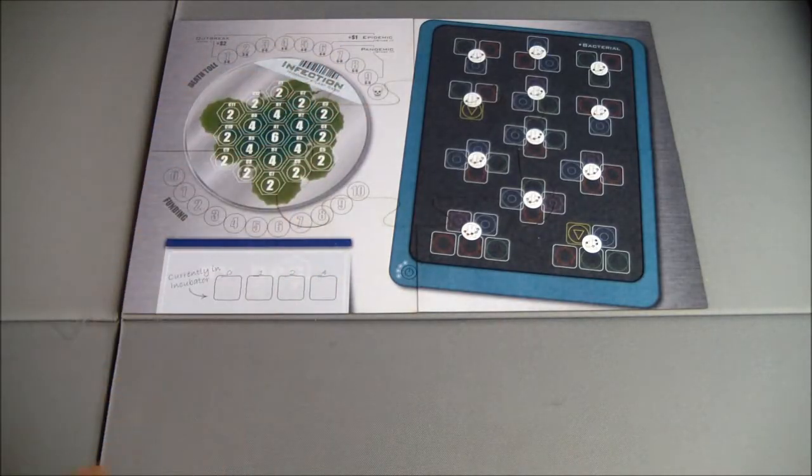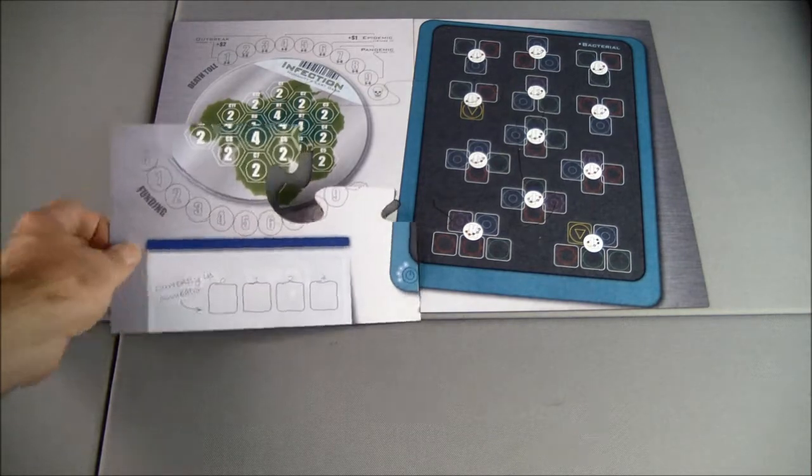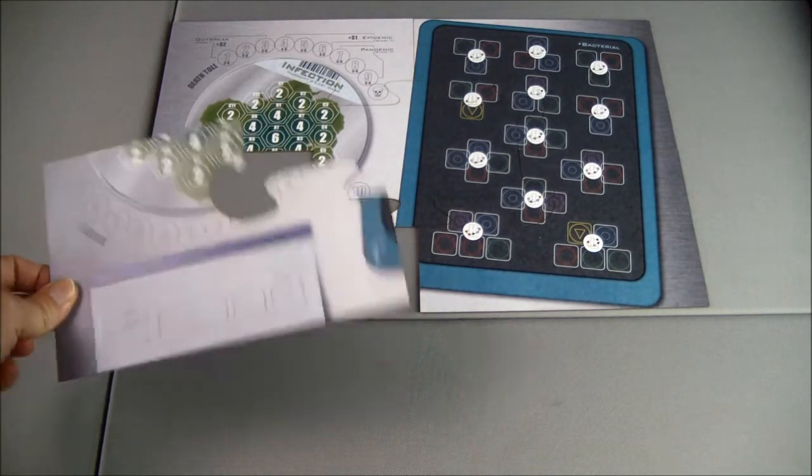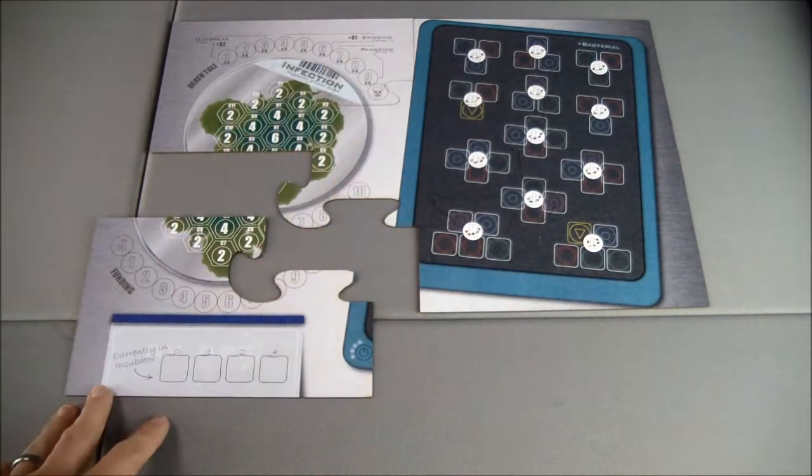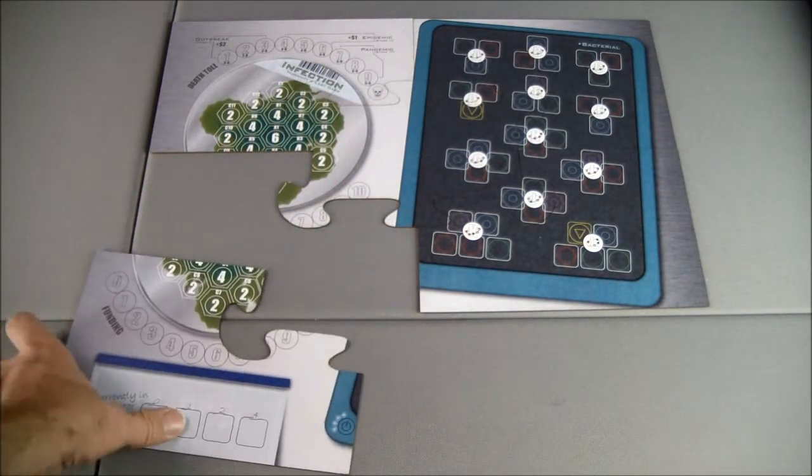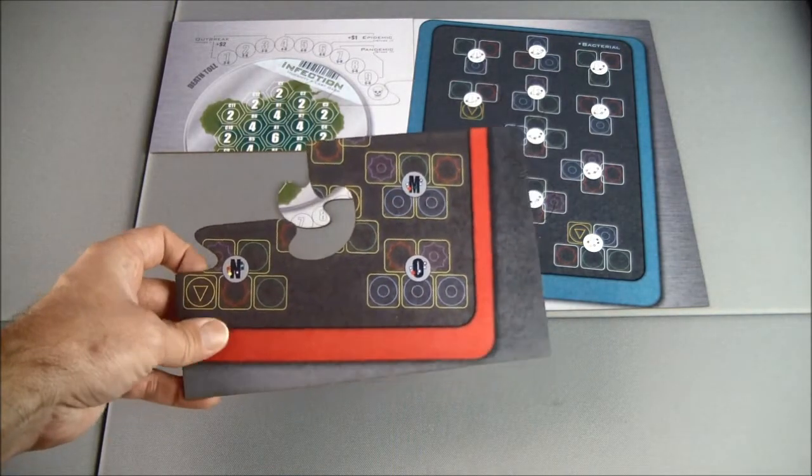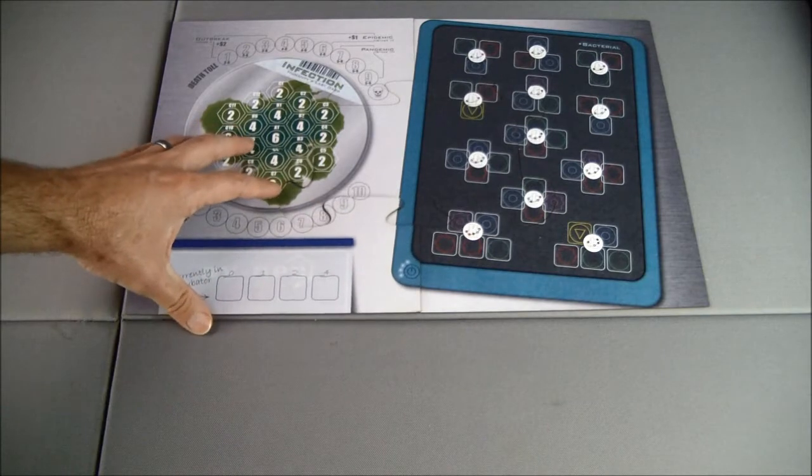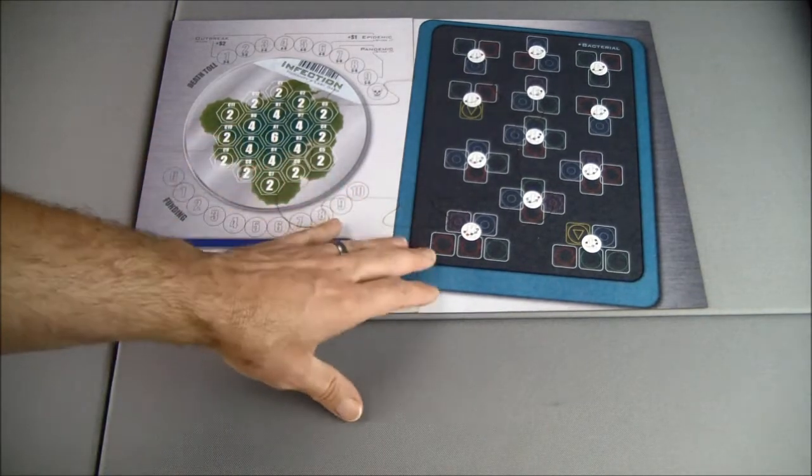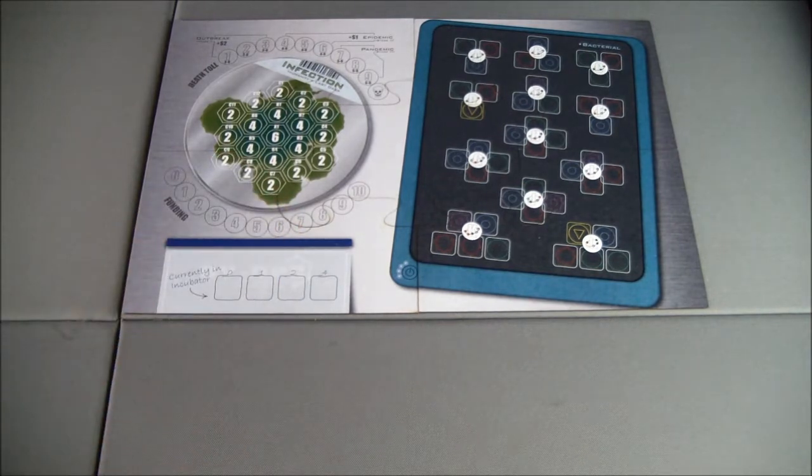First thing we're going to place down is the game board, one of the puzzle style boards that fits into the box easily. We're going to be playing on this side which is the bacterial side. A harder version on the back, you can see the red around the border, would be the viral side, but this playthrough we're going to stay on the easier of the two and play on the bacterial side.